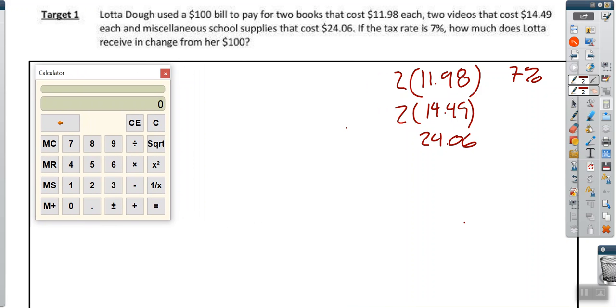This is a typical type of problem where you're going to have to figure out the cost with tax and then figure out the change. We're allowed to use calculators on this, so let's go ahead and do so. Eleven point nine eight times two, so that's twenty-three ninety-six. Then we have fourteen point four nine times two, which is twenty-eight ninety-eight.